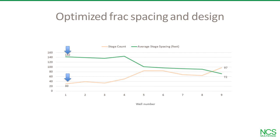Gauge data showed there was no communication between stages, so they tightened spacing to less than 100 feet and increased the number of stages to more than 80 — still no communication. By the ninth well, they were placing 97 stages, more than three times what they started with, at 72-foot spacing, half of what they started with. Pinpoint completions plus measured downhole data accelerated their learning curve, leading to faster optimization.